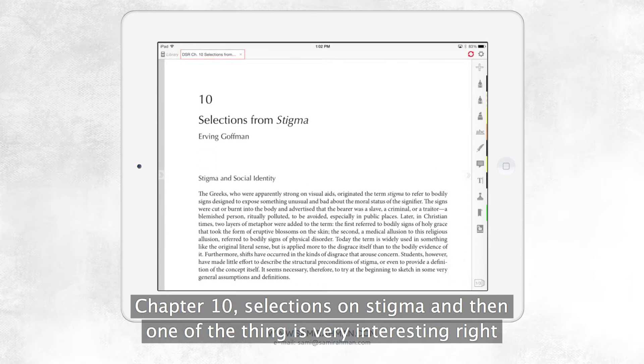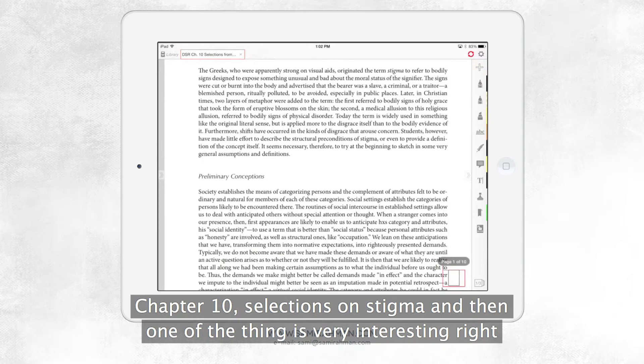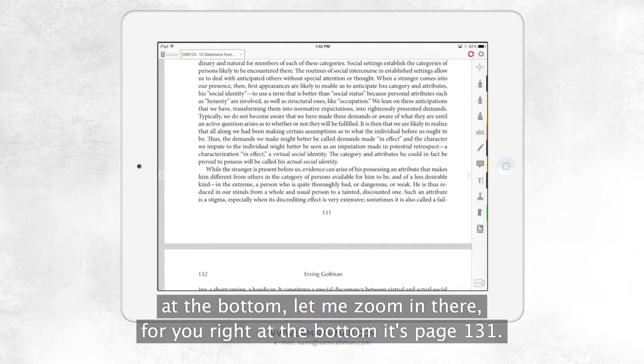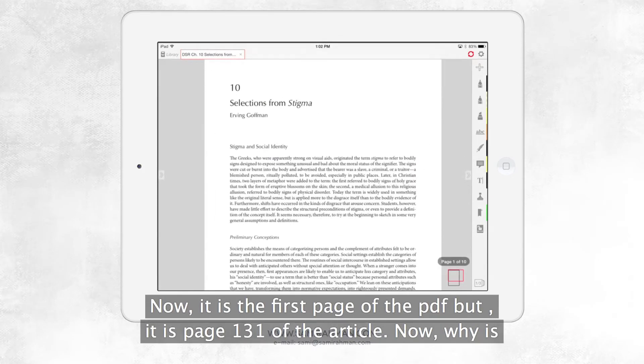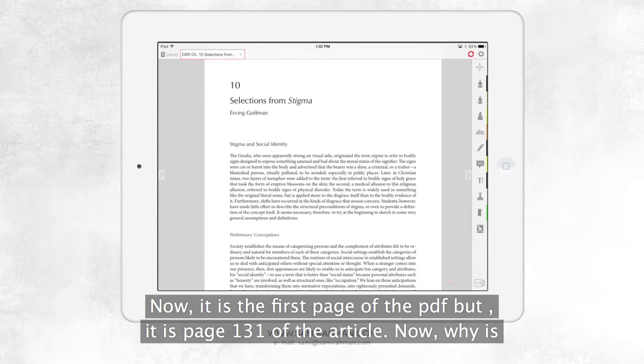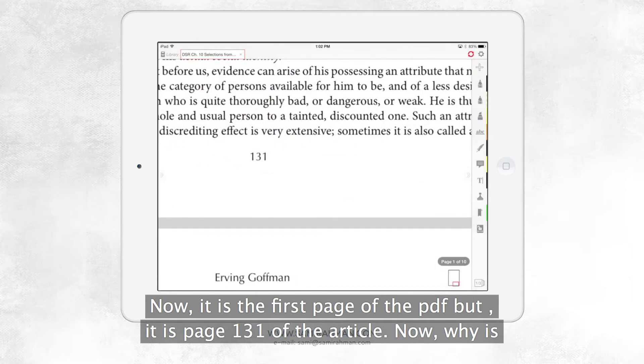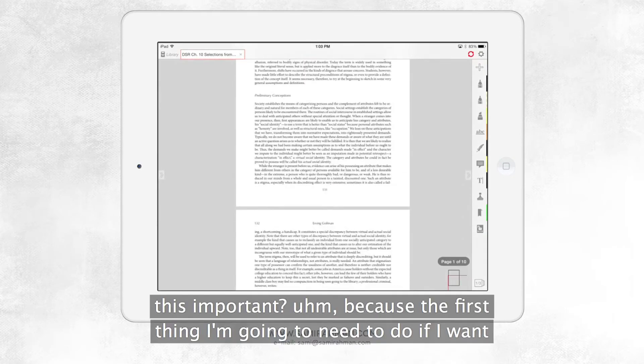So there it is. It's chapter 10, selections on stigma. And then one of the things that's very interesting, right at the bottom, let me zoom in there for you. Right at the bottom, it's page 131. Now, it is the first page of the PDF, but it is page 131 of the article. Now, why is this important?